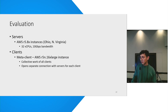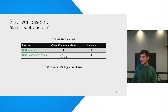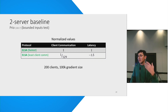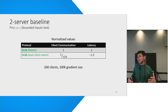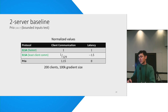Moving on to the evaluation. The first comparison I want to make is with the two-server baseline, for which we picked the Prio protocol. I'm showing client communication and latency as the two efficiency metrics. We have two variants of ELSA because of the trade-off — the fastest variant, and another variant in which you can reduce client communication by more than two orders of magnitude at just a 50% increase in latency. Both variants of ELSA are actually better than prior work for both client communication and latency.